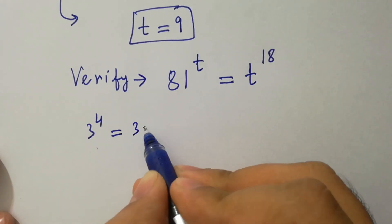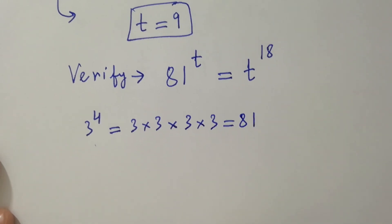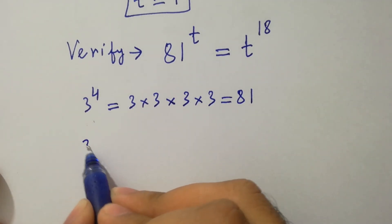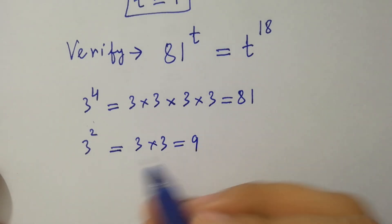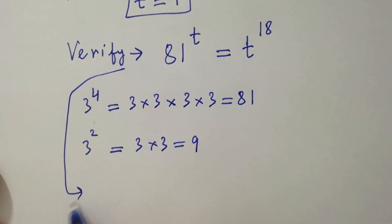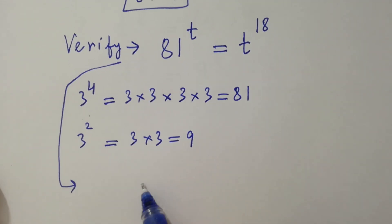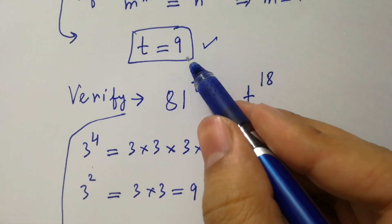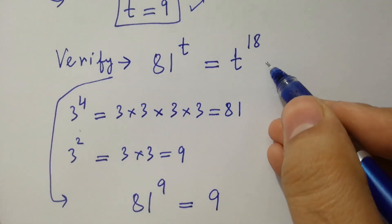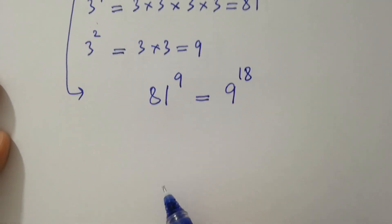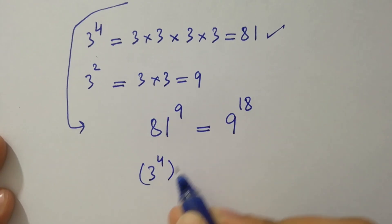In the next step I am going to verify. We note that 9 times 3 is 27, 27 times 3 is 81, and 3 to the power 2 equal to 3 times 3 which is 9. So substituting the value of t which is 9, it will be 81 to the power 9 equal to 9 to the power 18. Now 81 is 3 to the power 4, so we have 3 to the power 4, to the whole power 9.